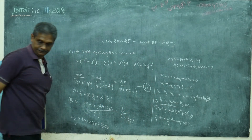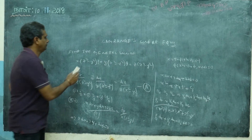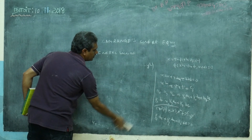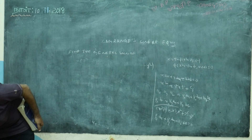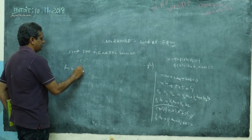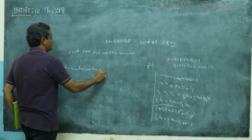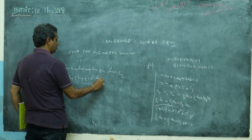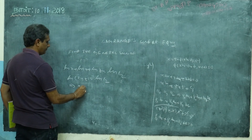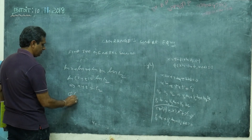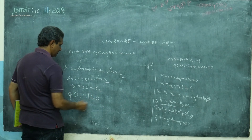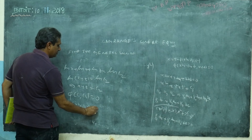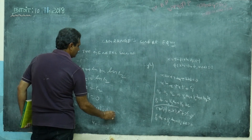Integrating: the integral of 1/x dx is log x. So log x + log y + log z = log c2, which means log(xyz) = log c2, therefore xyz = c2. My solution is φ(c1, c2) = 0, that is φ(x²+y²+z², xyz) = 0. See, our friend has come nicely — this is the general solution.